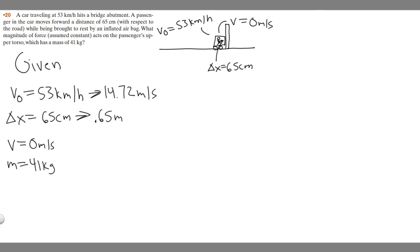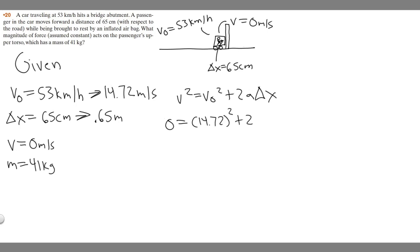So we just have to solve. We're going to use the kinematic equation: v squared equals v sub 0 squared plus 2a times delta x, because notice how we're given every variable needed. So plugging in: v is 0, so 0 squared equals 0 equals 14.72 squared plus 2 times a times delta x, which is 0.65. Moving 14.72 squared to the other side: negative 14.72 squared equals 2 times 0.65, which is 1.3, times a.